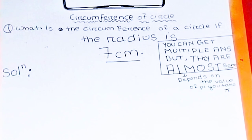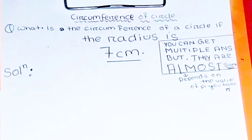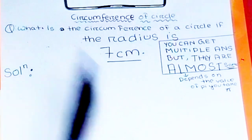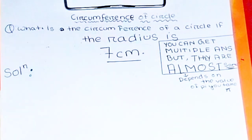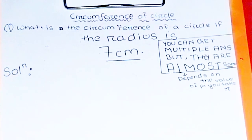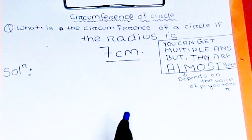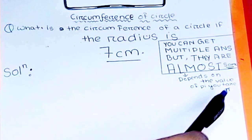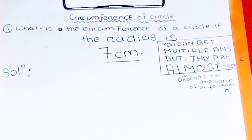It depends on the value of pi that you take. So here also I've written you can get multiple answers but they are almost the same, meaning almost the same. If you round them off they will only round off to a fixed number. Also I've written they depend on the value of pi that you take.